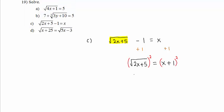Squaring a square root gives us the radicand, the stuff inside the radical, 2x plus 5. On the right-hand side, we have x plus 1 quantity squared, which means x plus 1 times x plus 1.